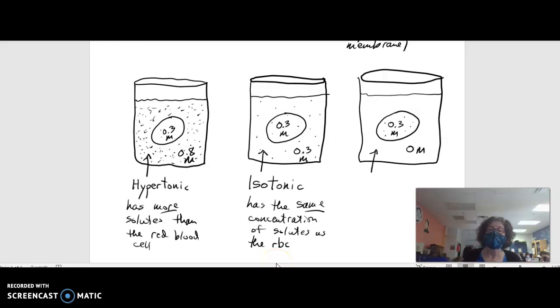Finally, the last one, since it has less solutes than the red blood cell, that is called a hypotonic solution. The hypotonic solution has a lower concentration of solutes than the red blood cell.